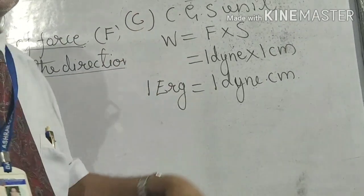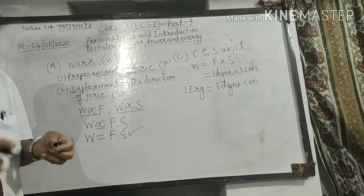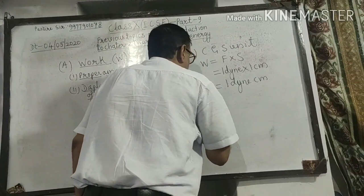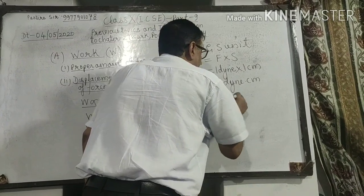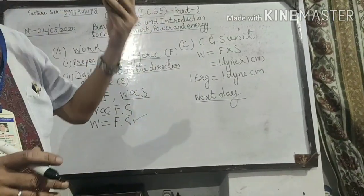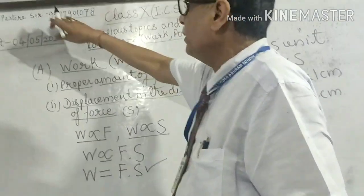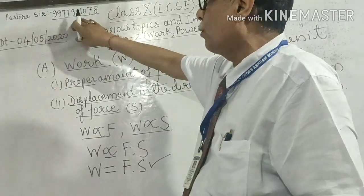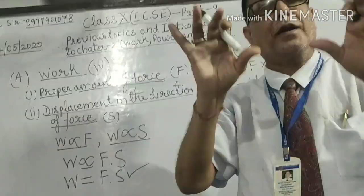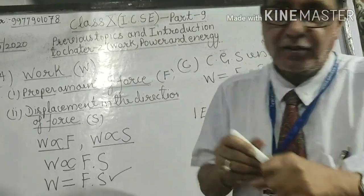Now there is another topic. Next day I will explain other important topics. But whenever you have any problem, please let me know your name. This is my WhatsApp number and mobile number. You can ask me: sir, I have not understood this topic, please explain it. I will be very happy if you are asking me. Thanks a lot.